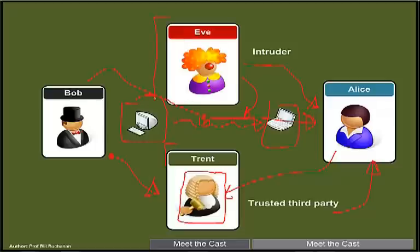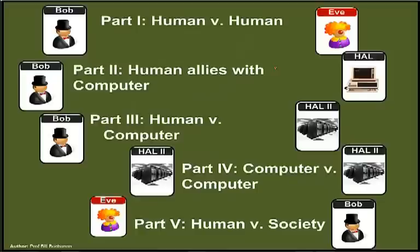Our challenge is to defeat Eve, and unfortunately there is always a way Eve can get around any method used. We'll look at five main parts: human versus human, humans allied with computers, humans versus the computer, computers versus computers, and finally humans against society — going through the basic codes and secrets involved in each.